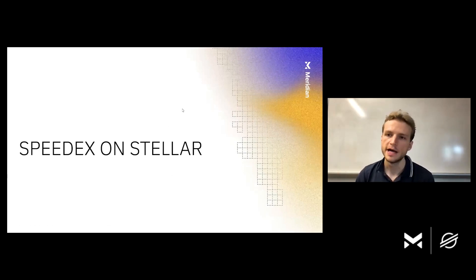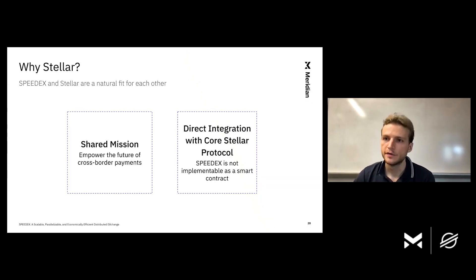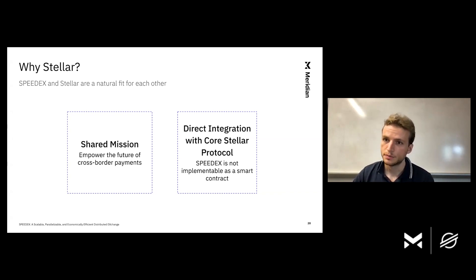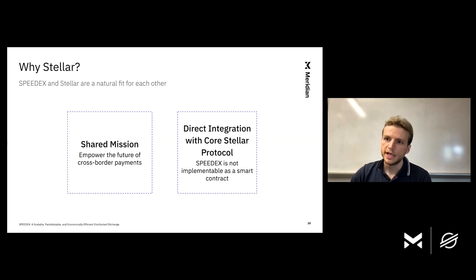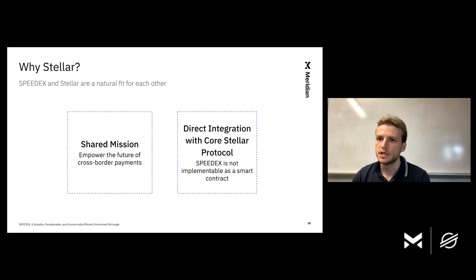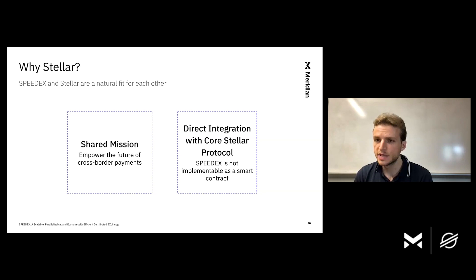So that's SpeedX. How does it fit into Stellar, and why are SpeedX and Stellar a natural match for each other? They both have a shared mission of empowering a future of cross-border payments that is both scalable and low cost. SpeedX also fits particularly well into the Stellar core protocol. The price computation algorithm is effective to run on-chain when implemented directly in the software underlying the blockchain node — the computation would be far too expensive to implement naively as a smart contract. Moreover, any kind of parallelism requires substantially reworking the core protocol to support that parallelism from the ground up.